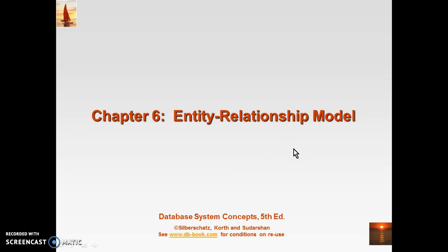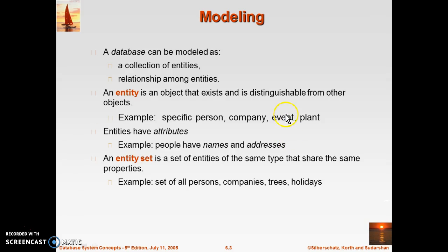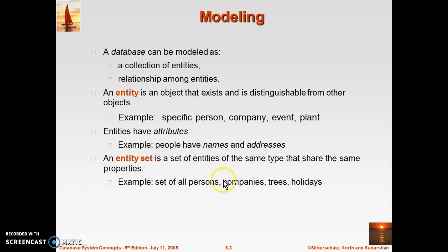We will start with an entity. Basically, an entity is an object that exists or that can be distinguishable from other objects. It can be any specific person, company, plant, or any physical or concrete thing — it can also be a conceptual thing. When similar types of entities come together, they become an entity set.